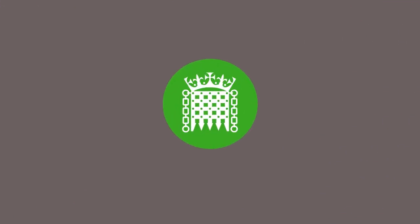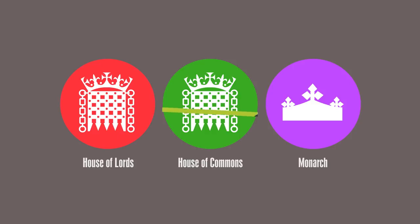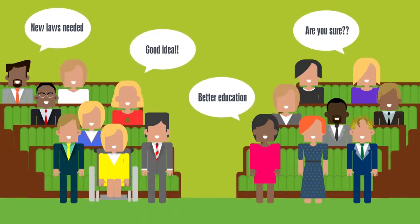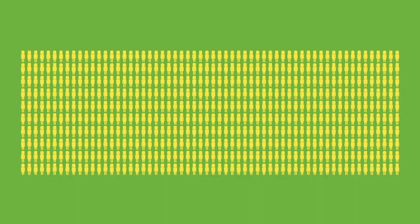Parliament is made up of three parts: the House of Commons, the House of Lords and the Monarch. The House of Commons is the elected Chamber of Parliament. It debates big issues, proposes laws, amends existing ones and challenges the government's work. There are 650 members of Parliament, or MPs, who each represent a constituency in the UK.